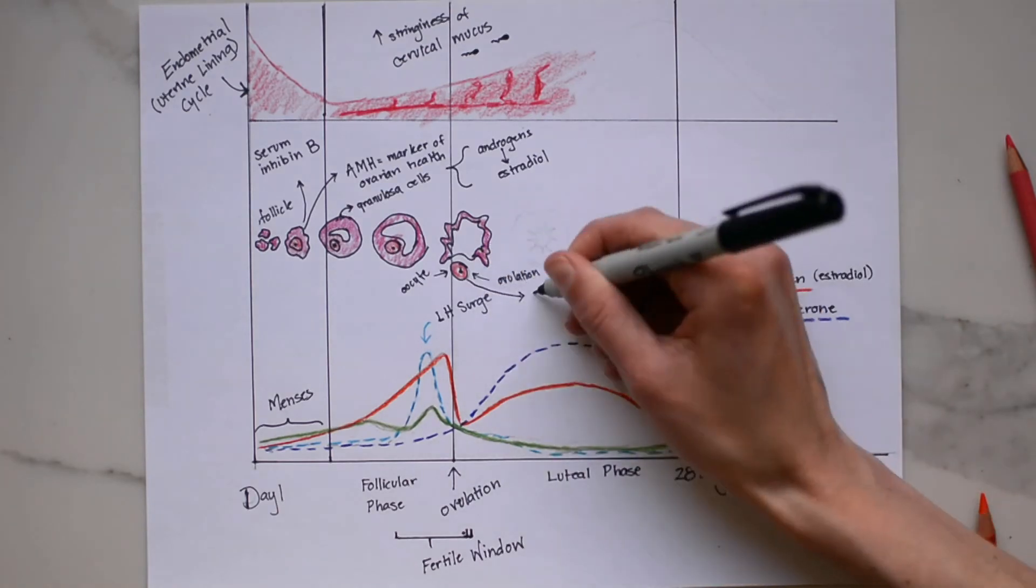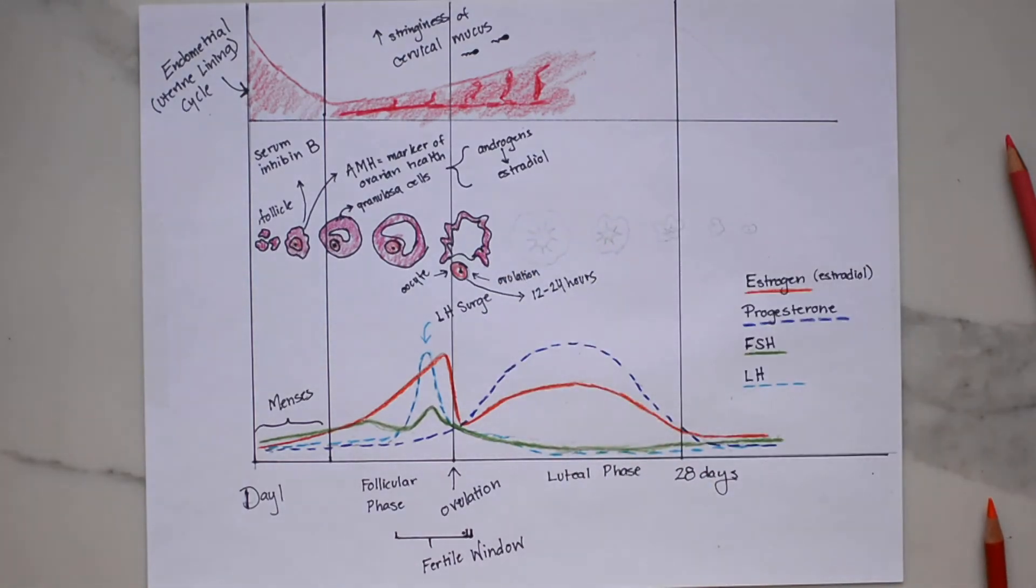When the oocyte or egg is released it lasts for about 12 to 24 hours. So if you're trying to get pregnant you want to have intercourse right when you detect the LH surge. Even more optimally you can time intercourse for the two days prior to the expected LH surge and ovulation and this is because sperm can last in the uterus for a maximum of five days. So you want them almost waiting there in the fallopian tubes for when that egg is released. Of course if you don't want to get pregnant know that the days prior to and the day of and after ovulation is when you are most fertile.